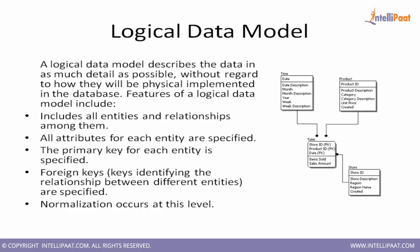Once attributes for each dimension are identified, we need to determine the primary key — a key that uniquely identifies each entry in the data. For example, with multiple products in a store, we need a way to differentiate one product from another using a unique product ID. In the logical data model, we identify both primary keys and foreign keys to establish unique identification and relationships between tables.